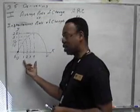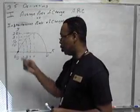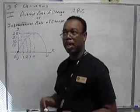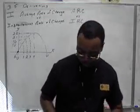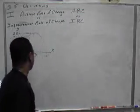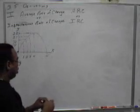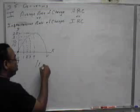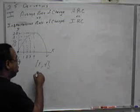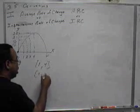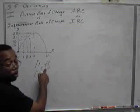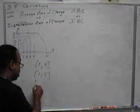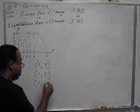Using these time periods and the outputs here, we're going to find several average rates of change. We'll find the average rate of change between the first hour and the fourth hour, the first hour and the third hour, and the first hour and the second hour.